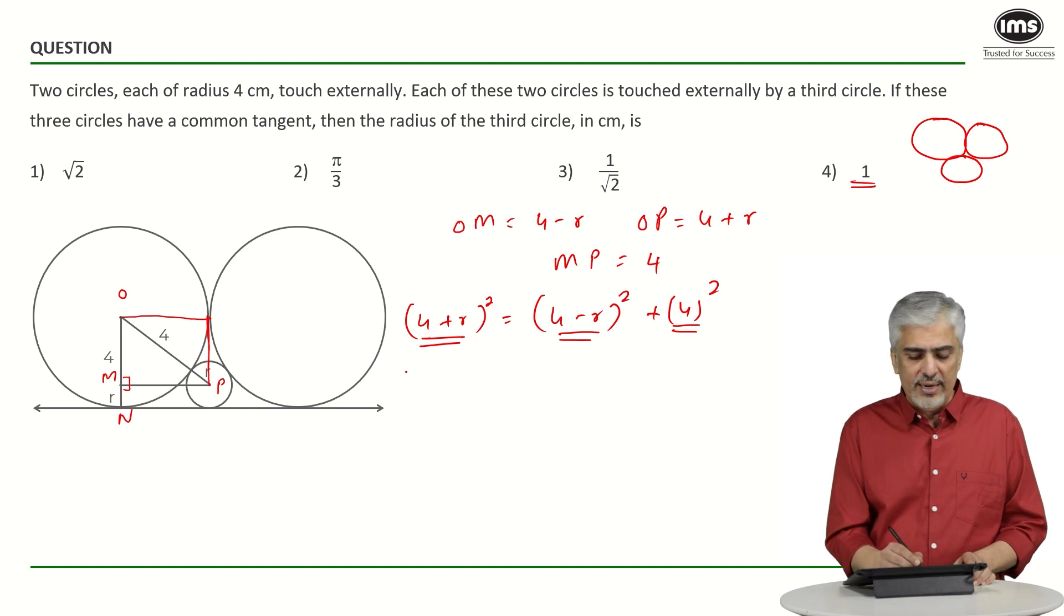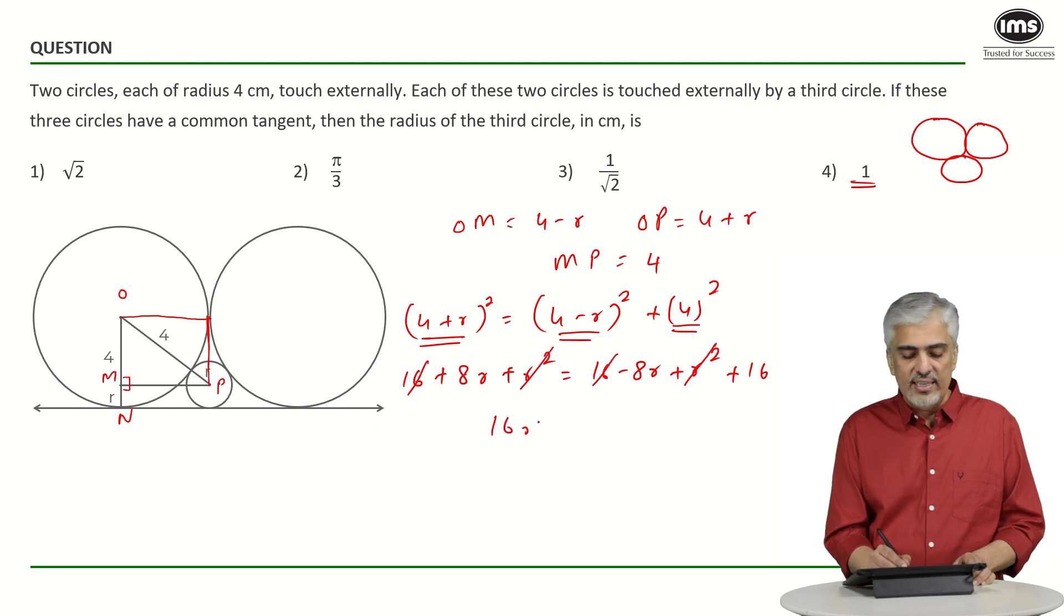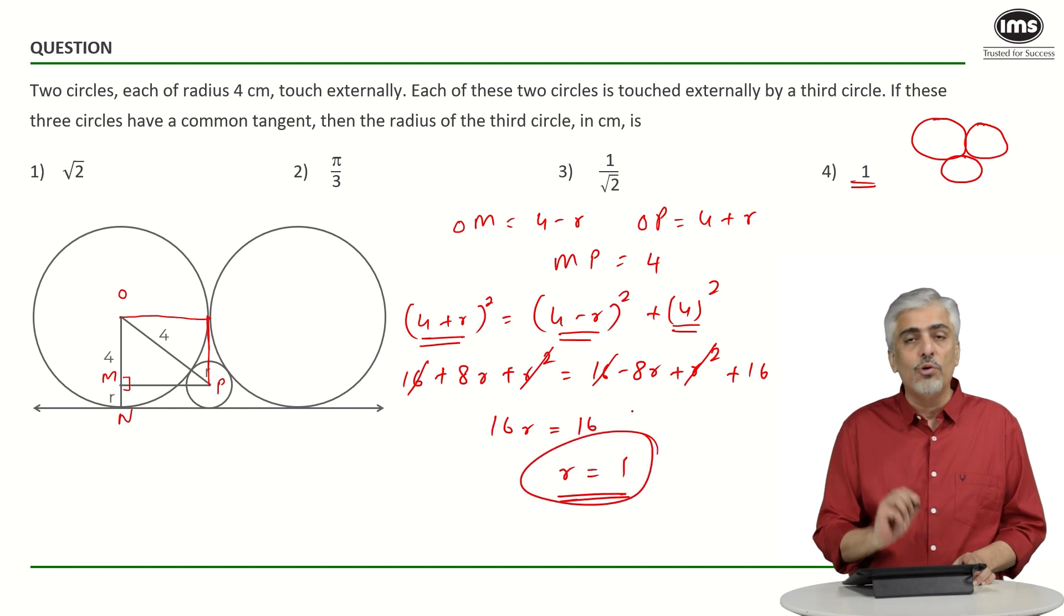Well, if you did not think of that, just expand it and solve it out. You will get 16 + 8R + R² = 16 - 8R + R² + 16. So, R² cuts out on both sides. 16 cuts out on both sides. So, we get 16R = 16 and R = 1 which is the fourth option.